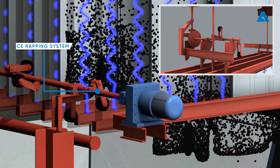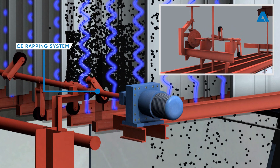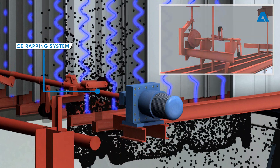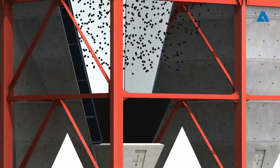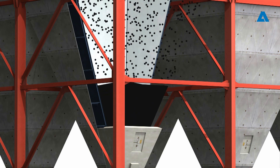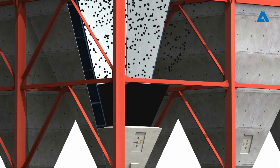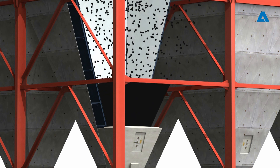The dust particles collected on the collecting plates are dislodged by a tumbling hammer rapping mechanism at preset intervals. Similar rapping arrangements are used for the emitting electrodes and, when required, for inlet gas distribution screens. The dislodged dust is collected in the dust hoppers and eventually removed through a suitable ash handling system.